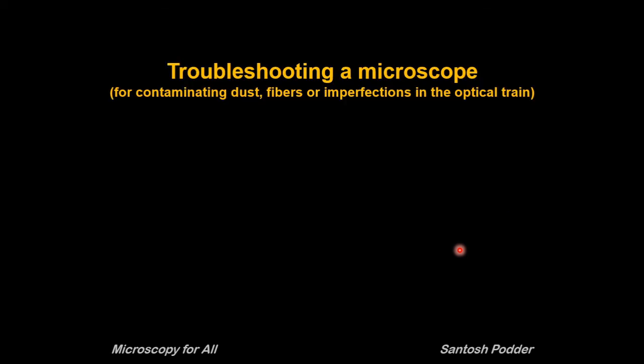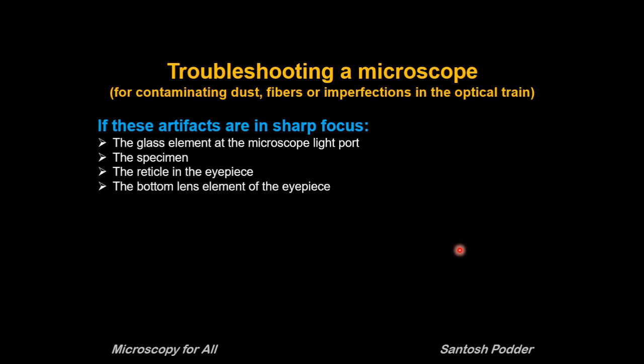Proper understanding of these illumination and image planes will help you troubleshoot the microscope, particularly for contaminating dust, fibers, or imperfections in the optical path. If these artifacts are in sharp focus, you should look near the surfaces that are part of the image-forming set of conjugate planes — for example, glass elements at the microscope light port. From my experience, I would not suggest putting your hand into this yourself; call an engineer to get it done.